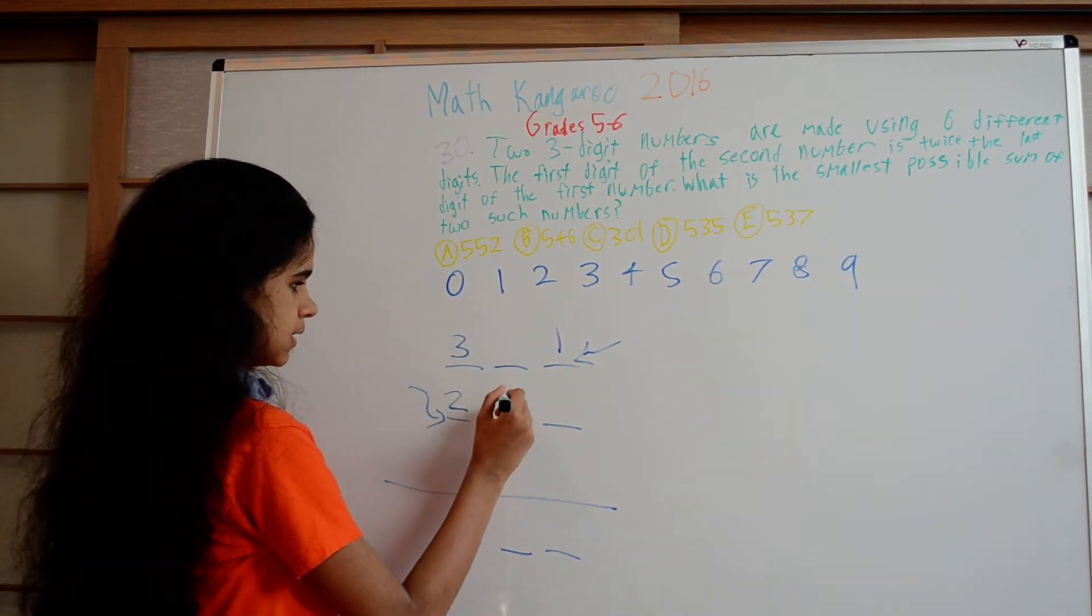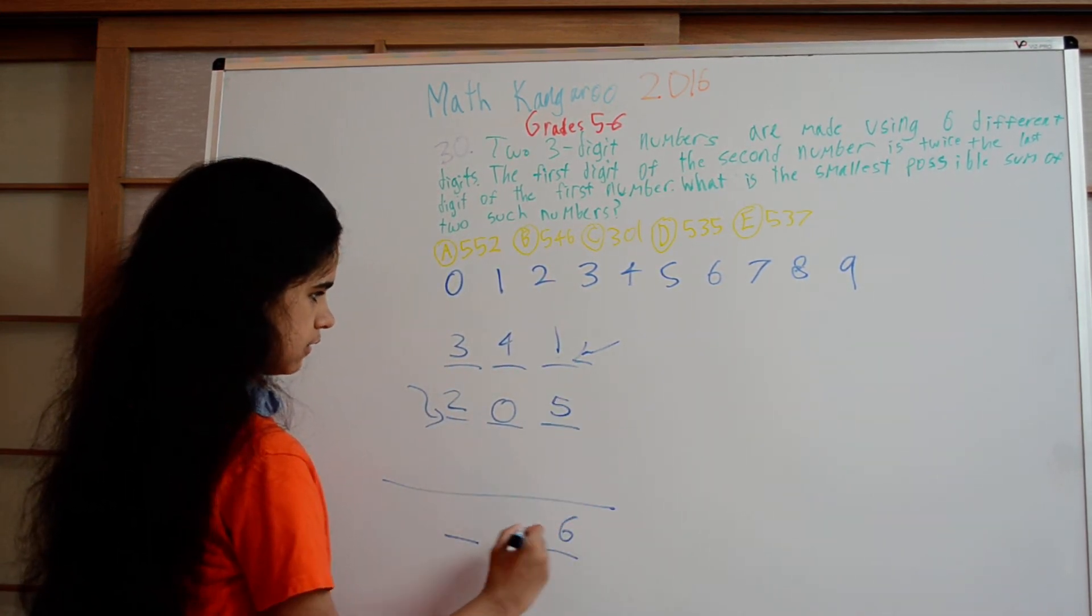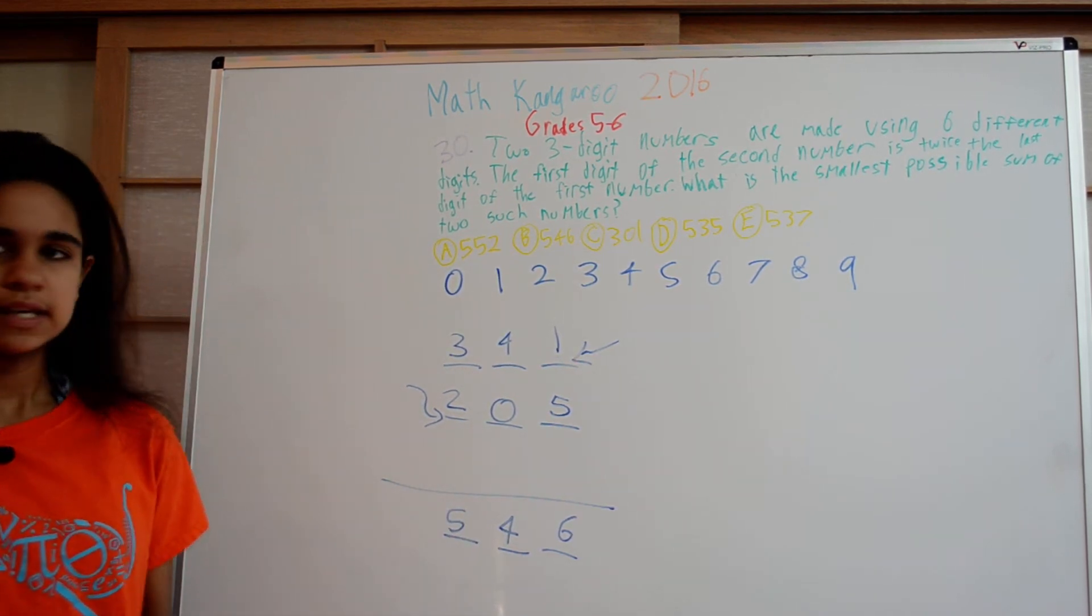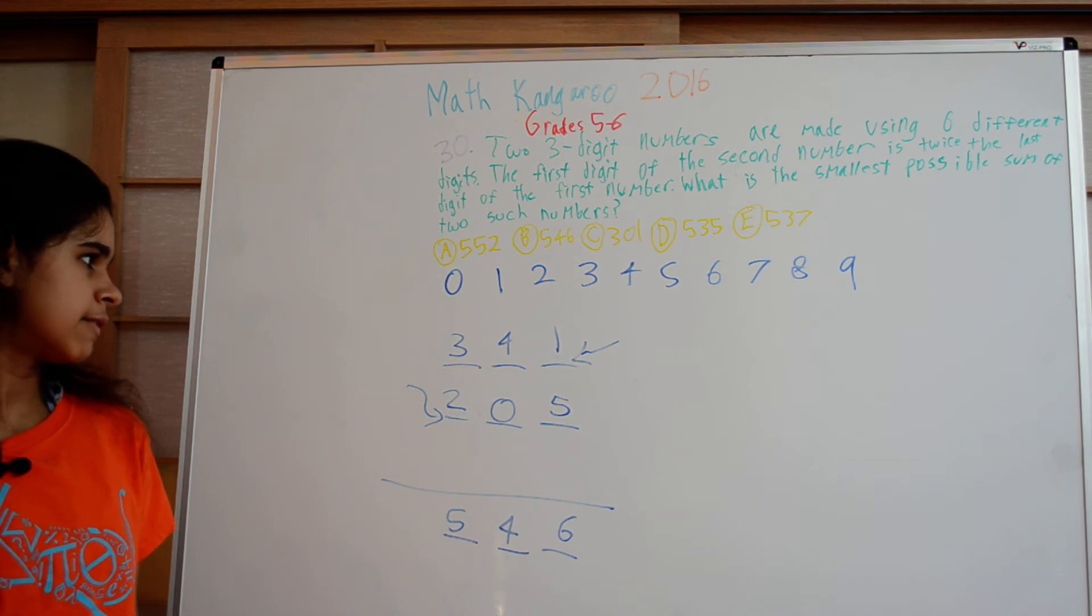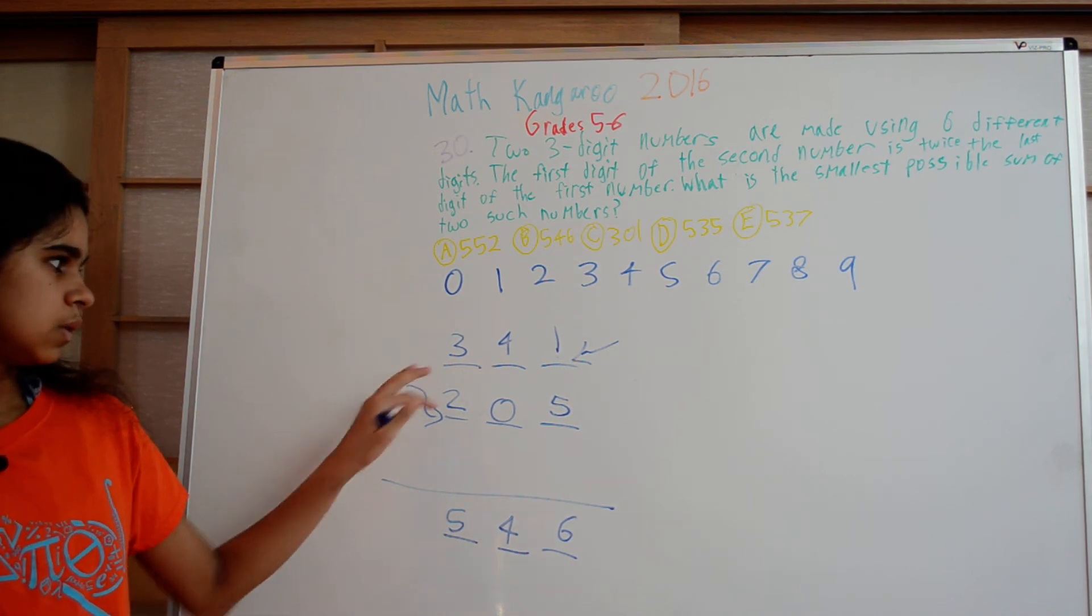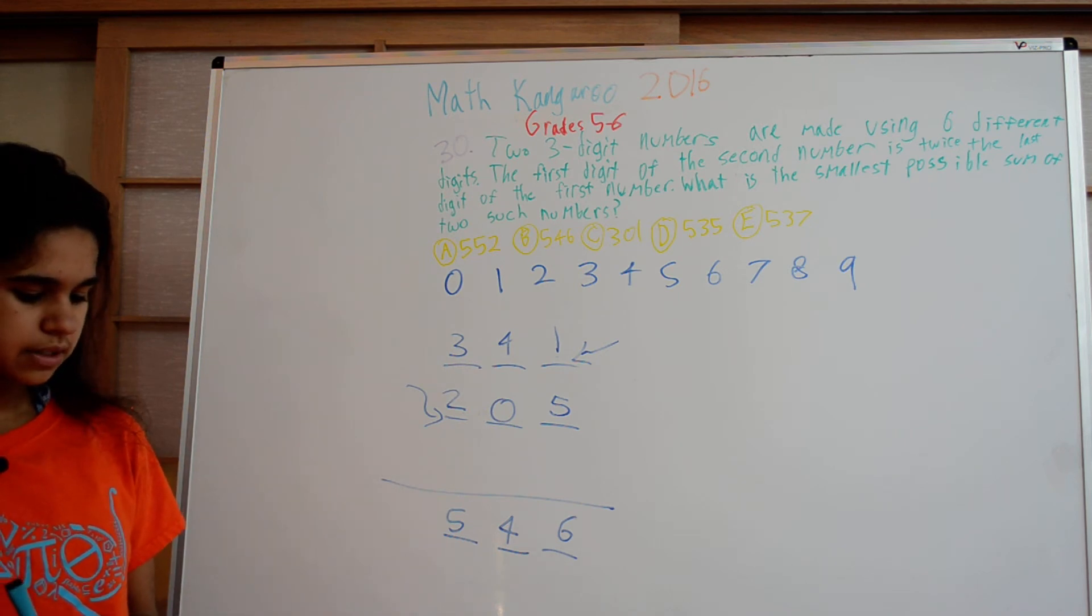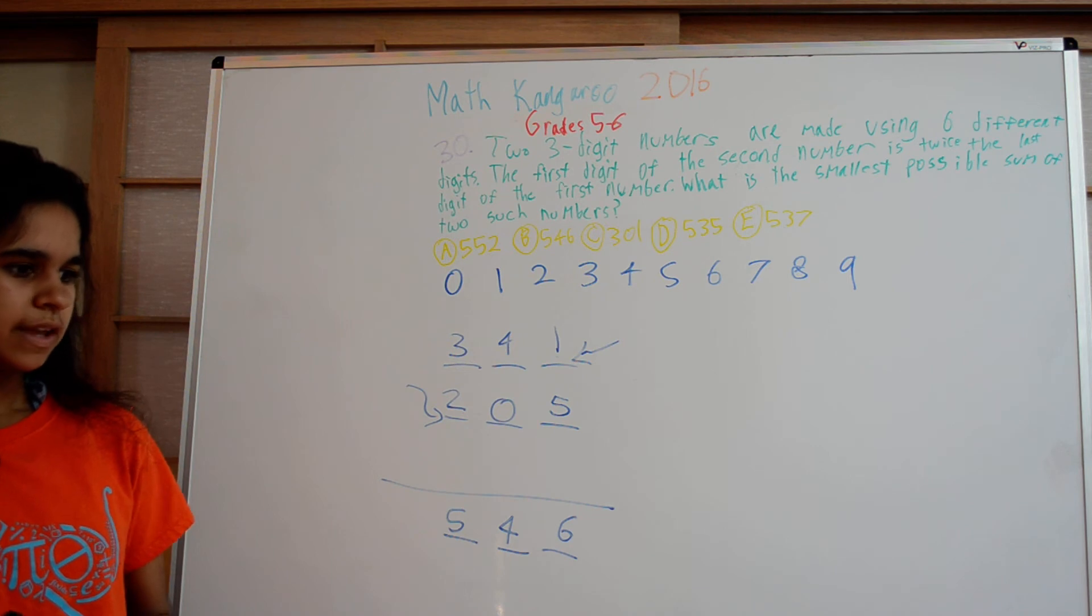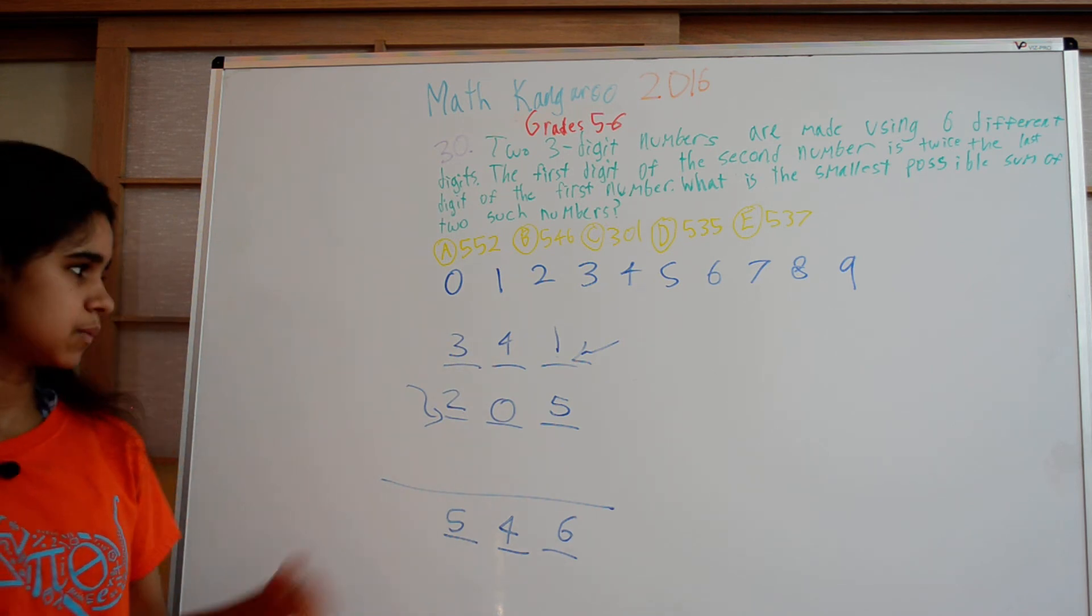Then we can only put three here, and here we could put zero or four, and here five. This would give us 546. Is this the best we can do? At first it might seem like it because we put the smallest number possible here. But putting this 2, we weren't able to put a 1 there, which would give us the smallest possible sum. We had to put this 3.